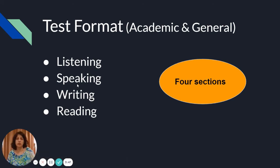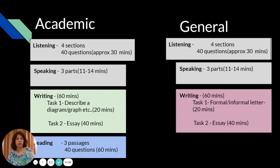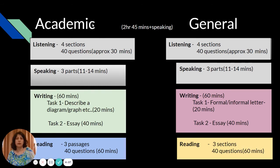The test format - as I mentioned before, there are four sections: listening, speaking, writing, and reading for both academic and general. Let's have a look at what these sections contain, the timings, number of questions, and things around it. If you go for academic you'll have these four sections, and for general also you'll have four sections. Listening has four sections with 40 questions and you get approximately 30 minutes.